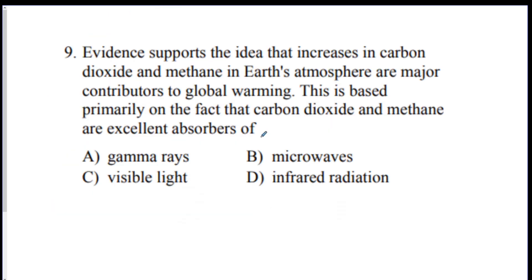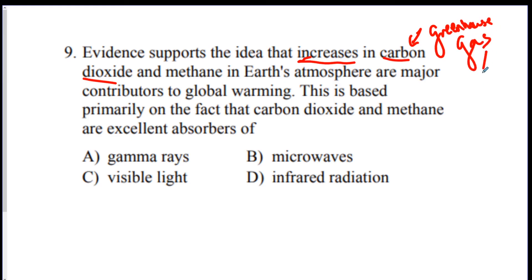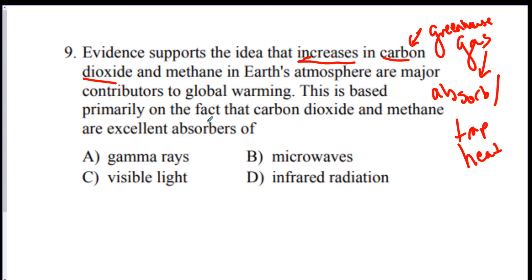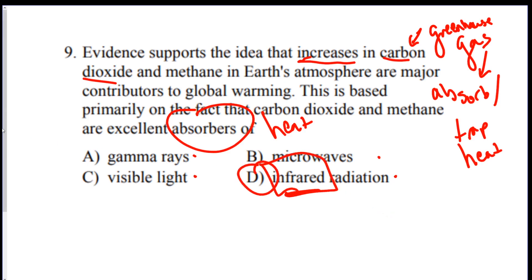Question 9: evidence supports the idea that increases in carbon dioxide — remember, this is a greenhouse gas — and methane in Earth's atmosphere are major contributors to global warming. This is based primarily on the fact that CO₂ and methane are excellent absorbers of heat. You just have to remember which word means heat: D, infrared, means heat. That's your answer.